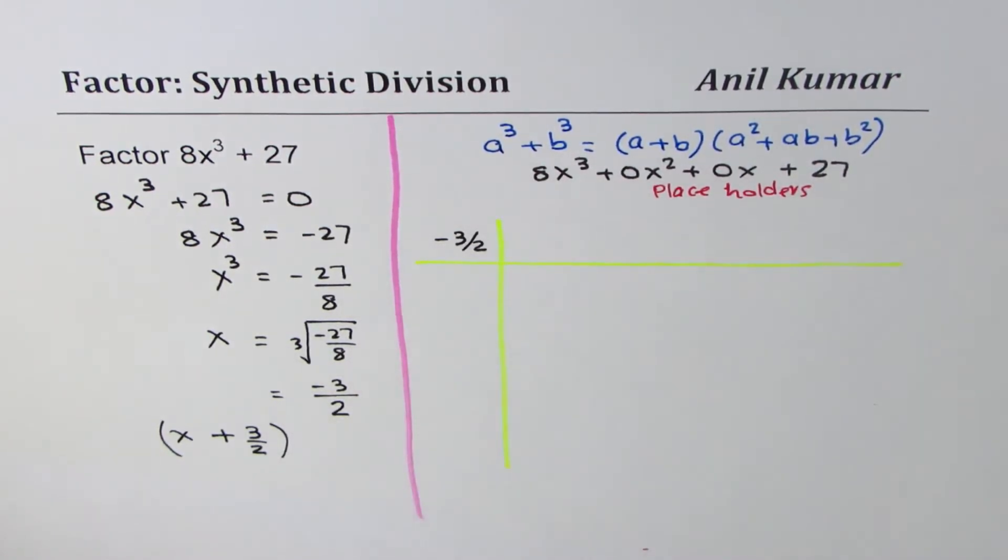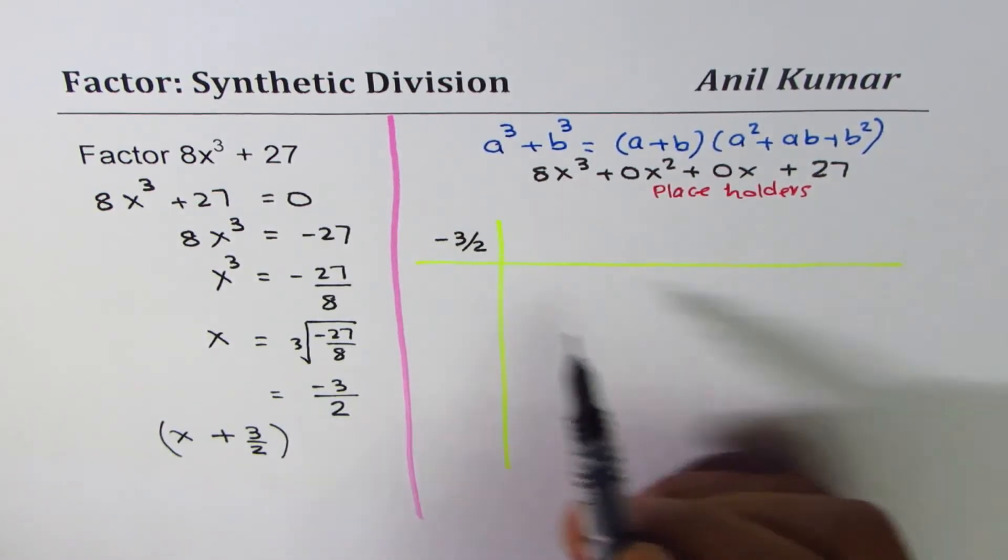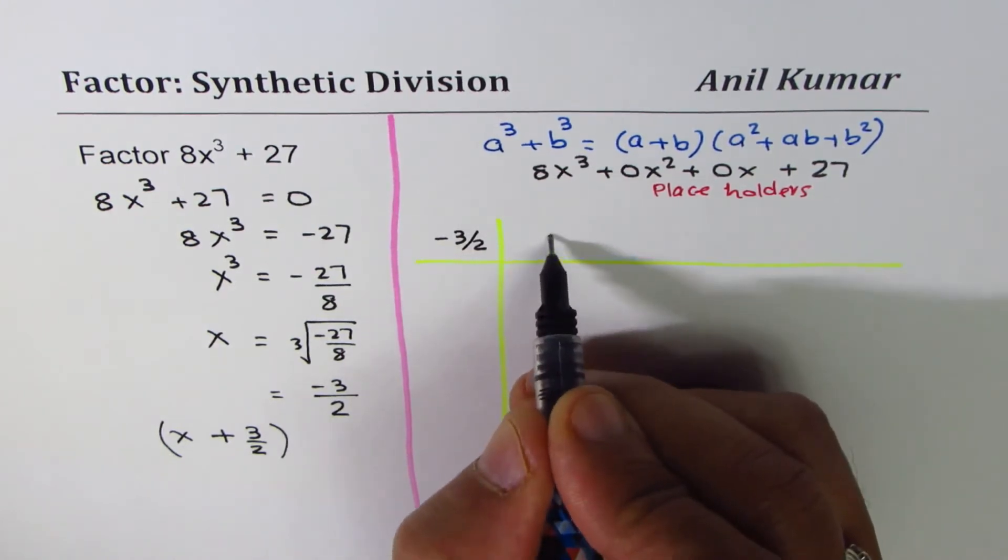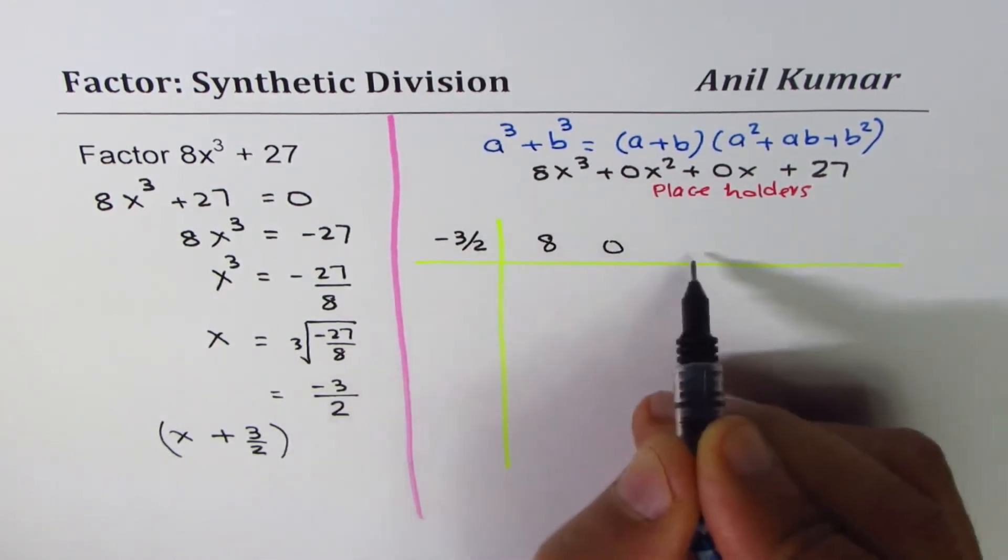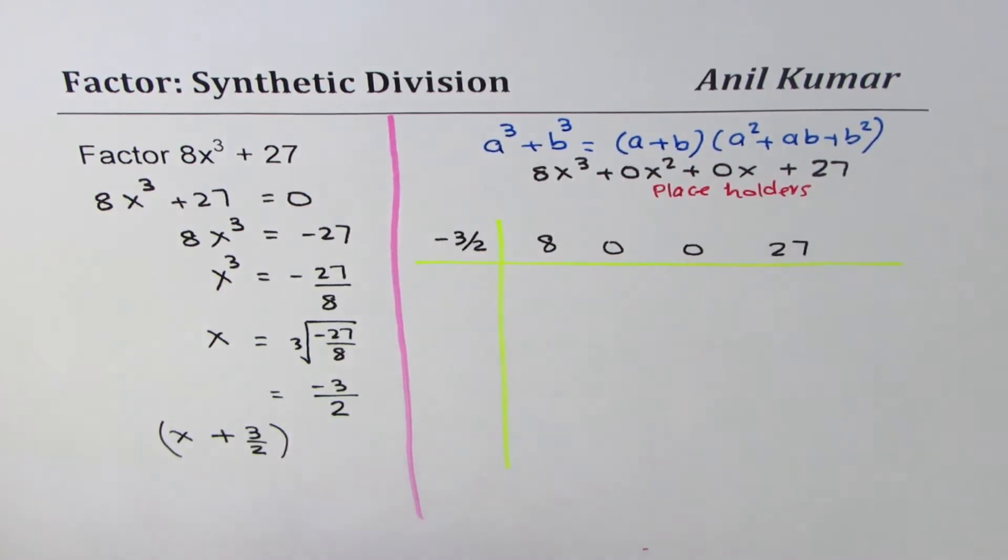Coefficients of all these terms are written on top of this line, which you may call as a form of a table. So 8 is the coefficient of x³, then 0, 0, and the constant 27.